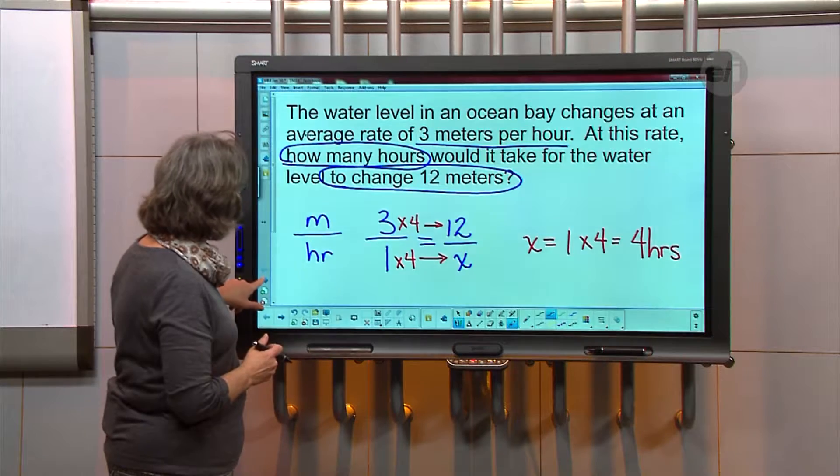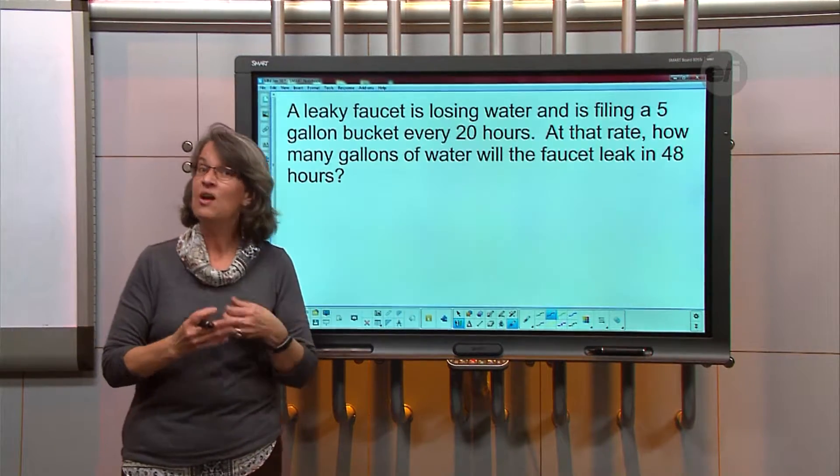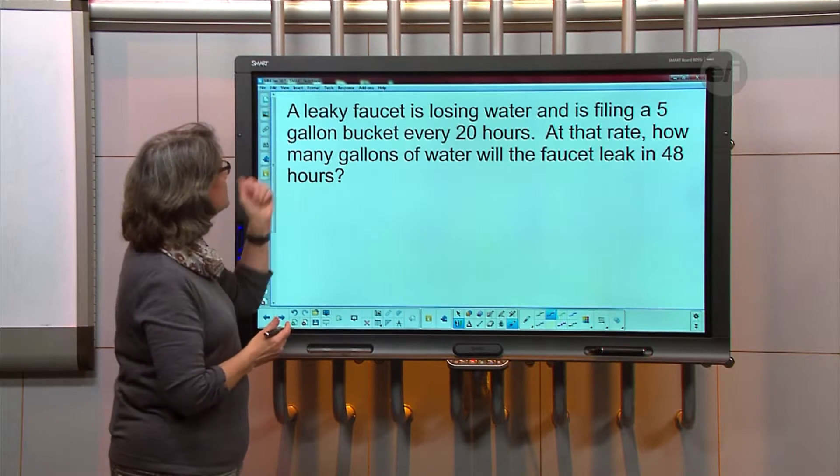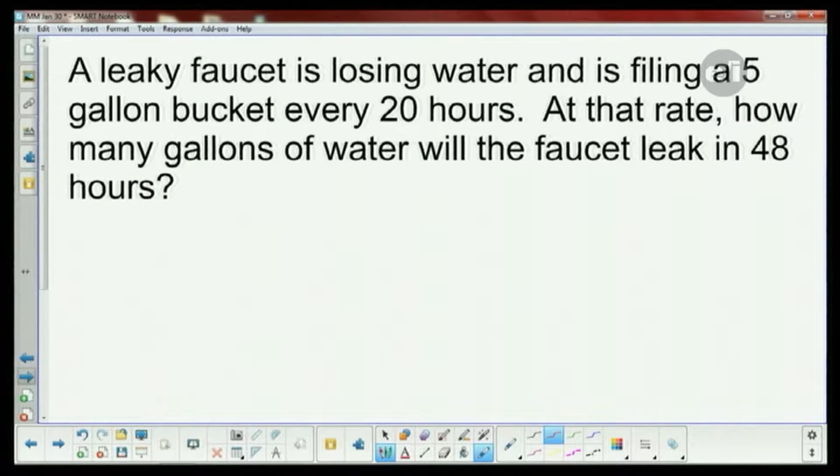Now for another one, let's look at this problem. We're going to try the cross multiplying because maybe that will help. It says a leaky faucet is losing water and is filling a 5 gallon bucket every 20 hours. That's pretty leaky. At that rate, how many gallons of water will the faucet leak in 48 hours?